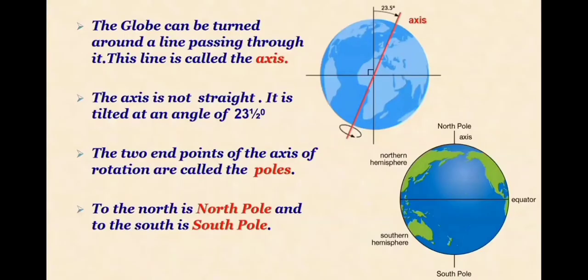So the globe can be turned around. A line passes through it. This line is called an axis. Can you see the line? So this is an axis.